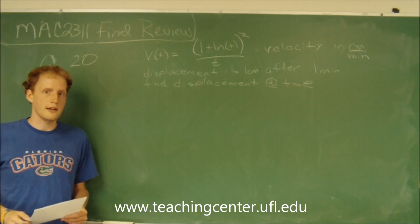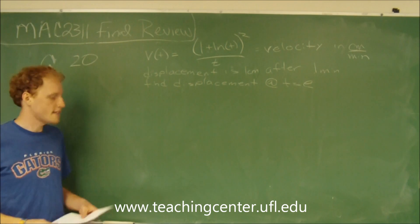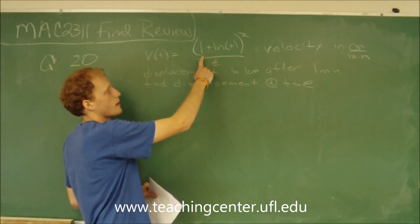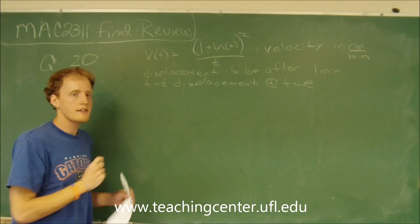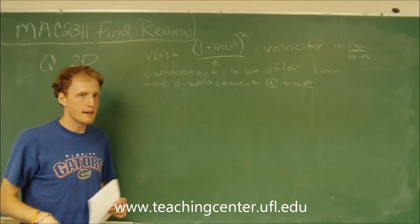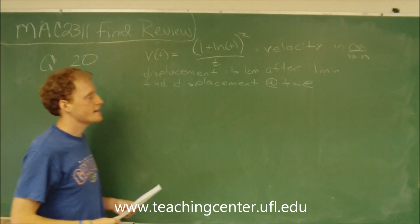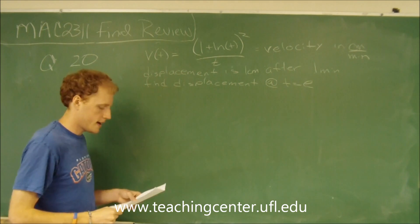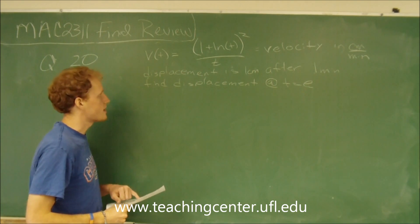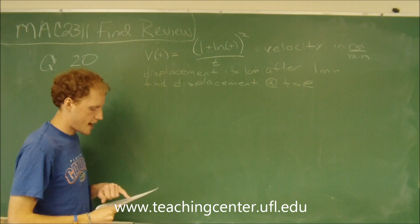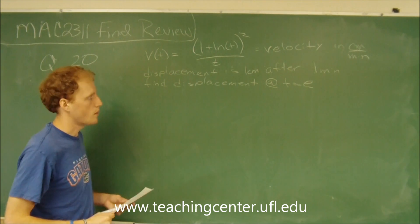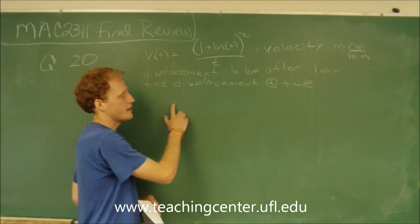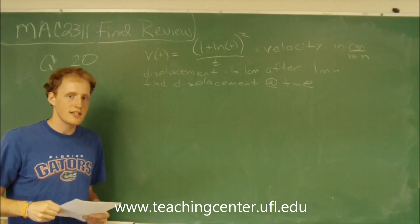This is question number 20. Suppose that the velocity function is the quantity 1 plus the natural log of t, squared, all over t. That is the velocity of an object in centimeters per minute. It says that the displacement after one minute is one centimeter, and it wants us to find the displacement at time equals e.